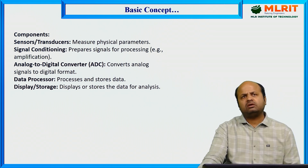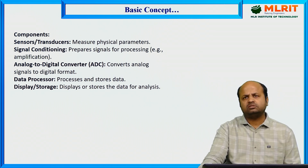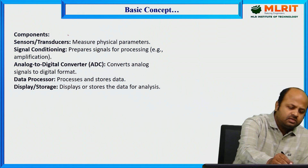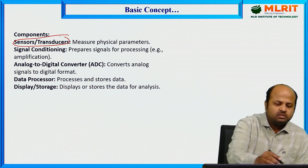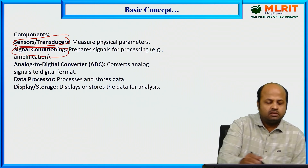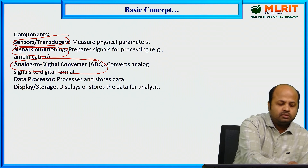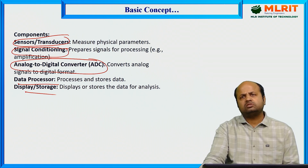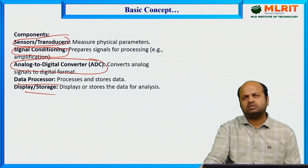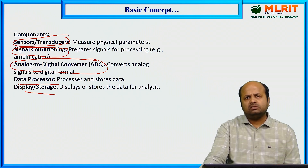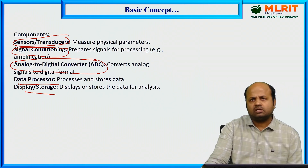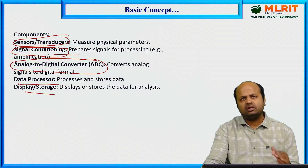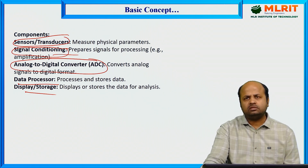Now, what are the basic components of a data acquisition system? The basic components are: sensors and transducers, signal conditioning circuits, ADC converters, data preprocessors, and a display unit. The sensors measure physical quantities and convert them into electrical signals. Once converted to electrical signals, we apply signal conditioning, which removes noise and amplifies the signals for further processing.